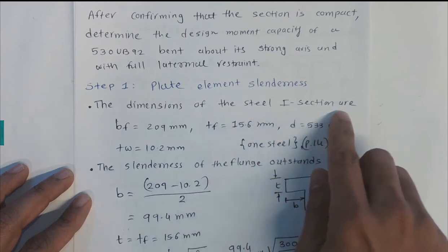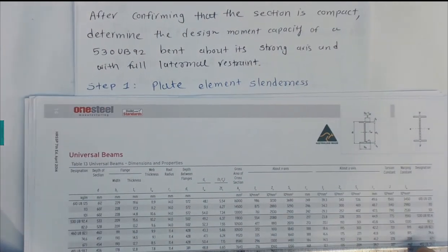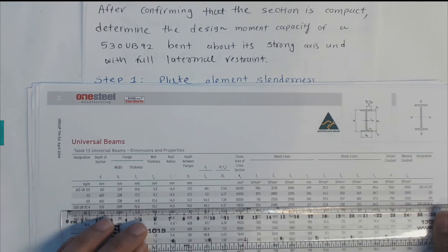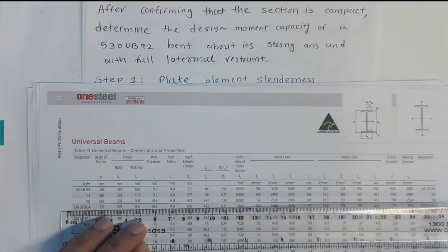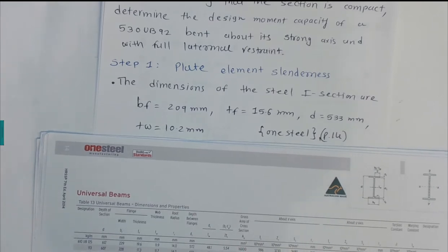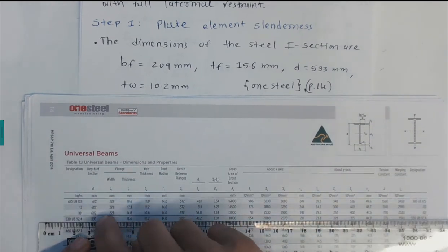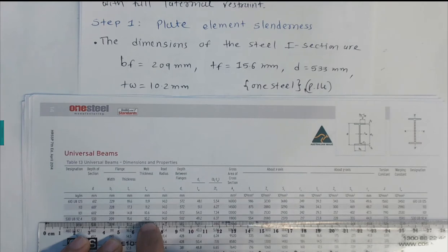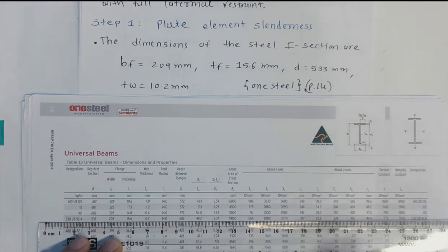In Step 1, we extract the dimensions of the steel I-section 530 UB 92 from the OneSteel tables, page 14. For 530 UB 92.4 we find: D = 533 mm (depth), BF = 209 mm (flange width), TF = 15.6 mm (flange thickness), and TW = 10.2 mm (web thickness).